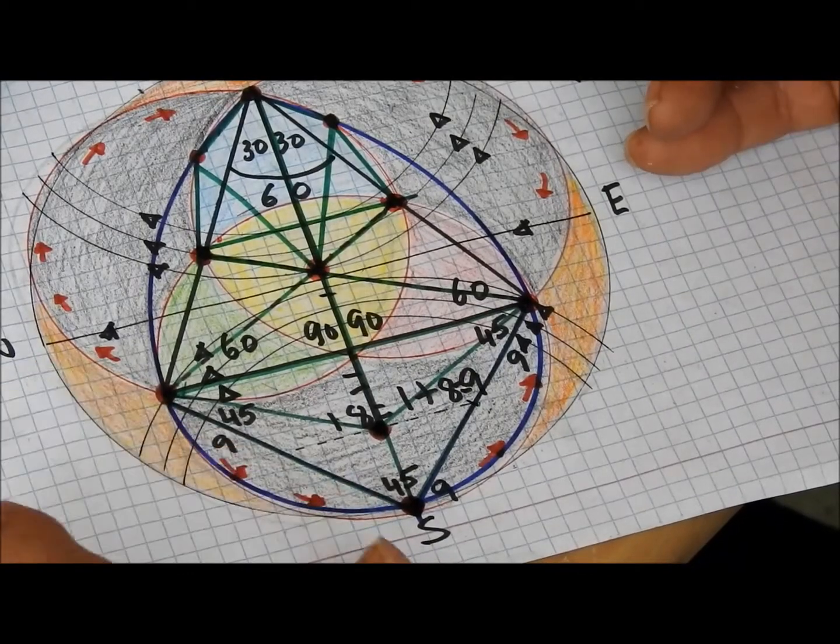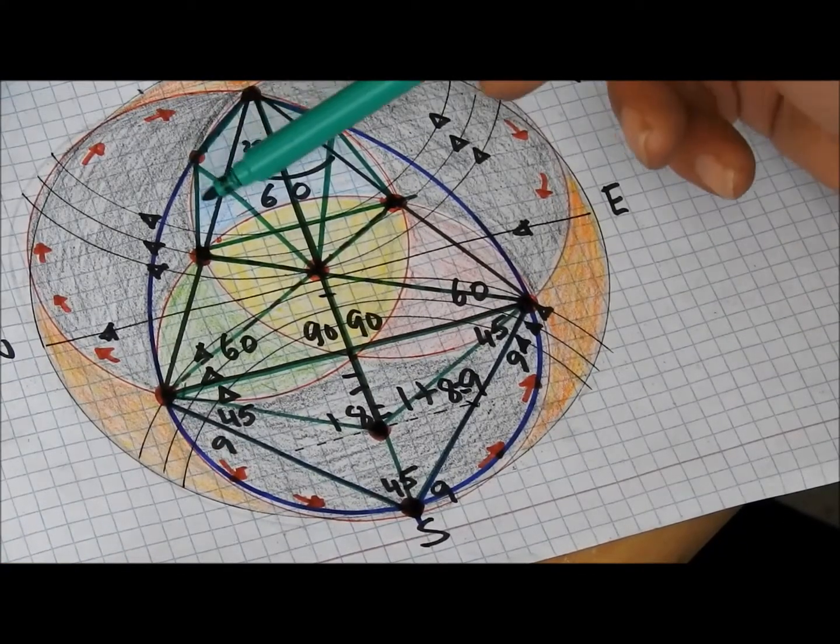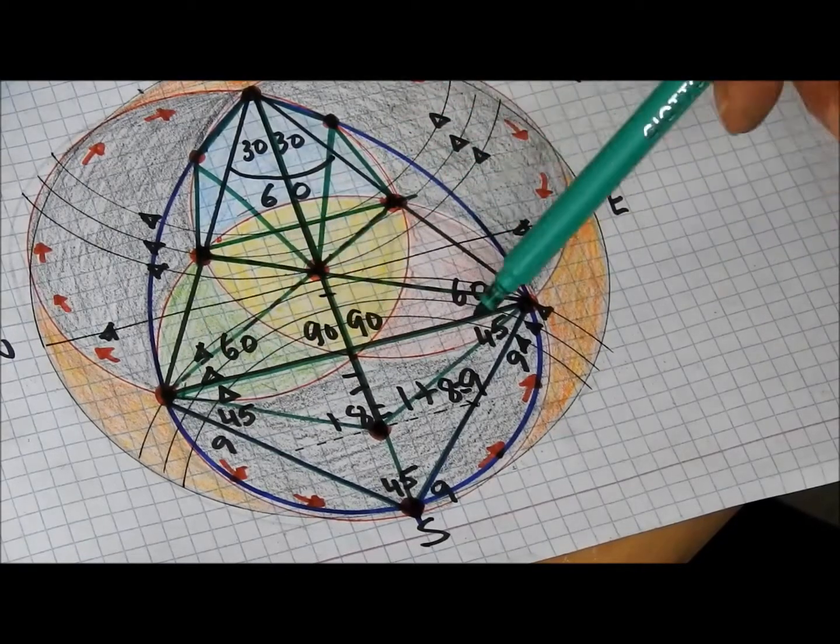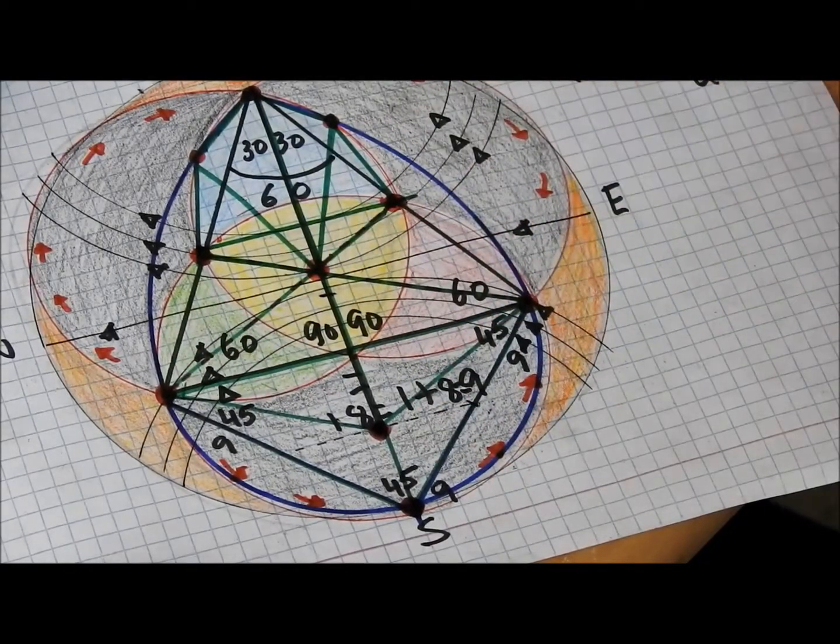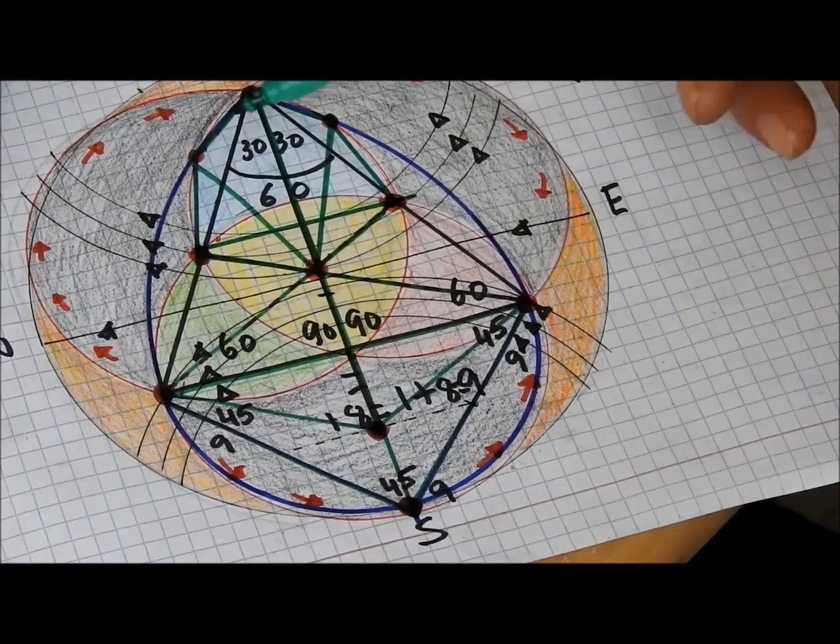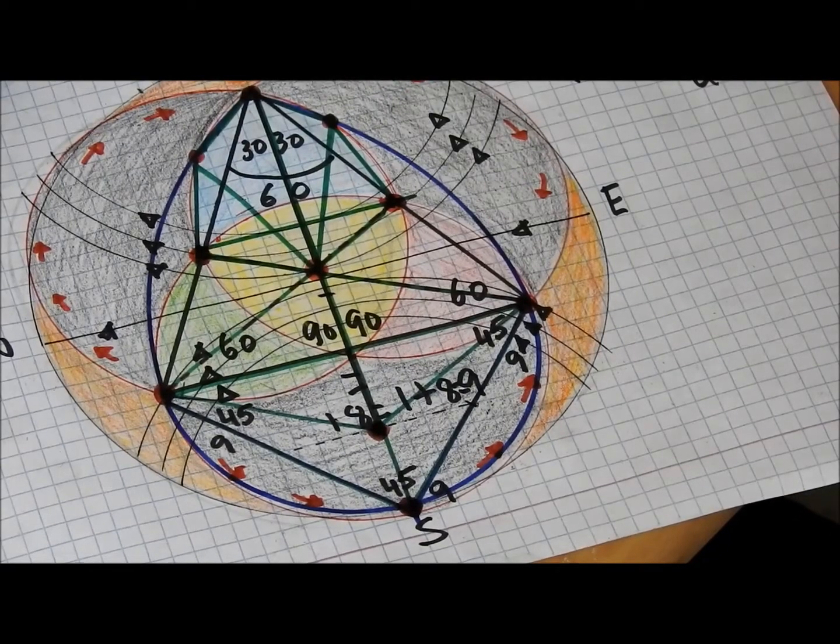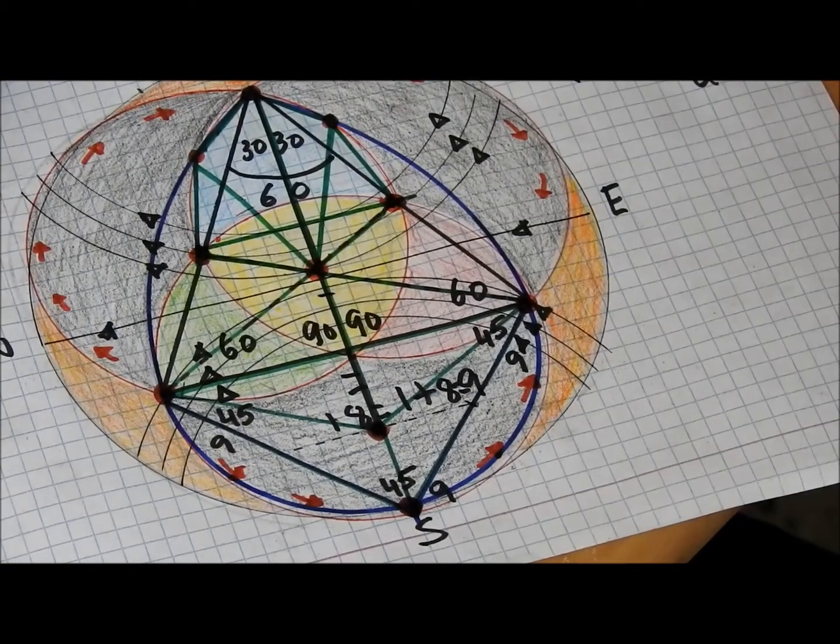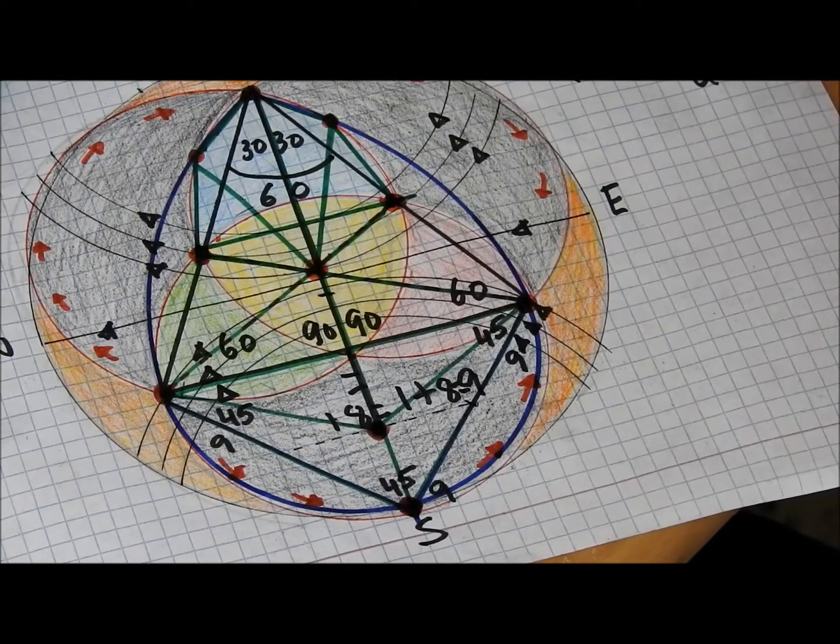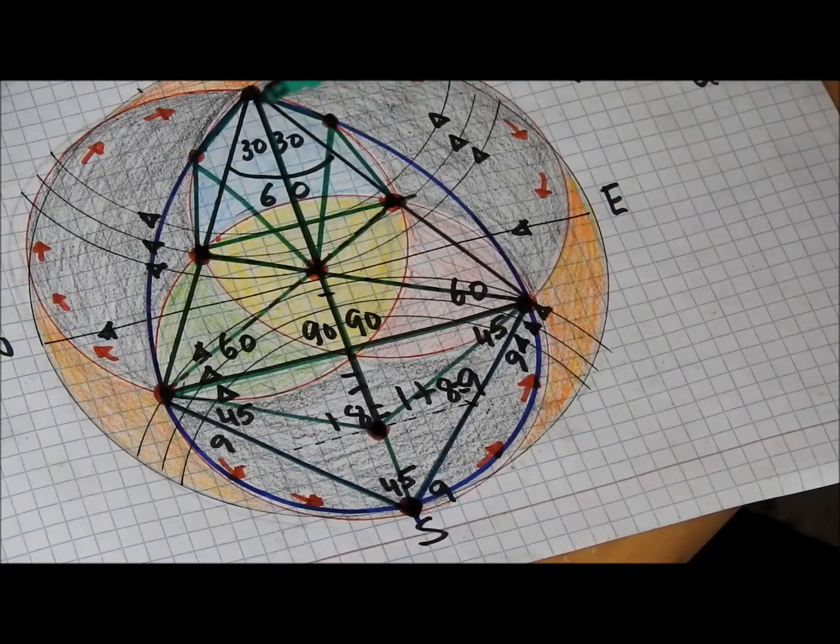So here you've got all these points of the tree of life. It's a bit confusing in between the drawings with the black lines.